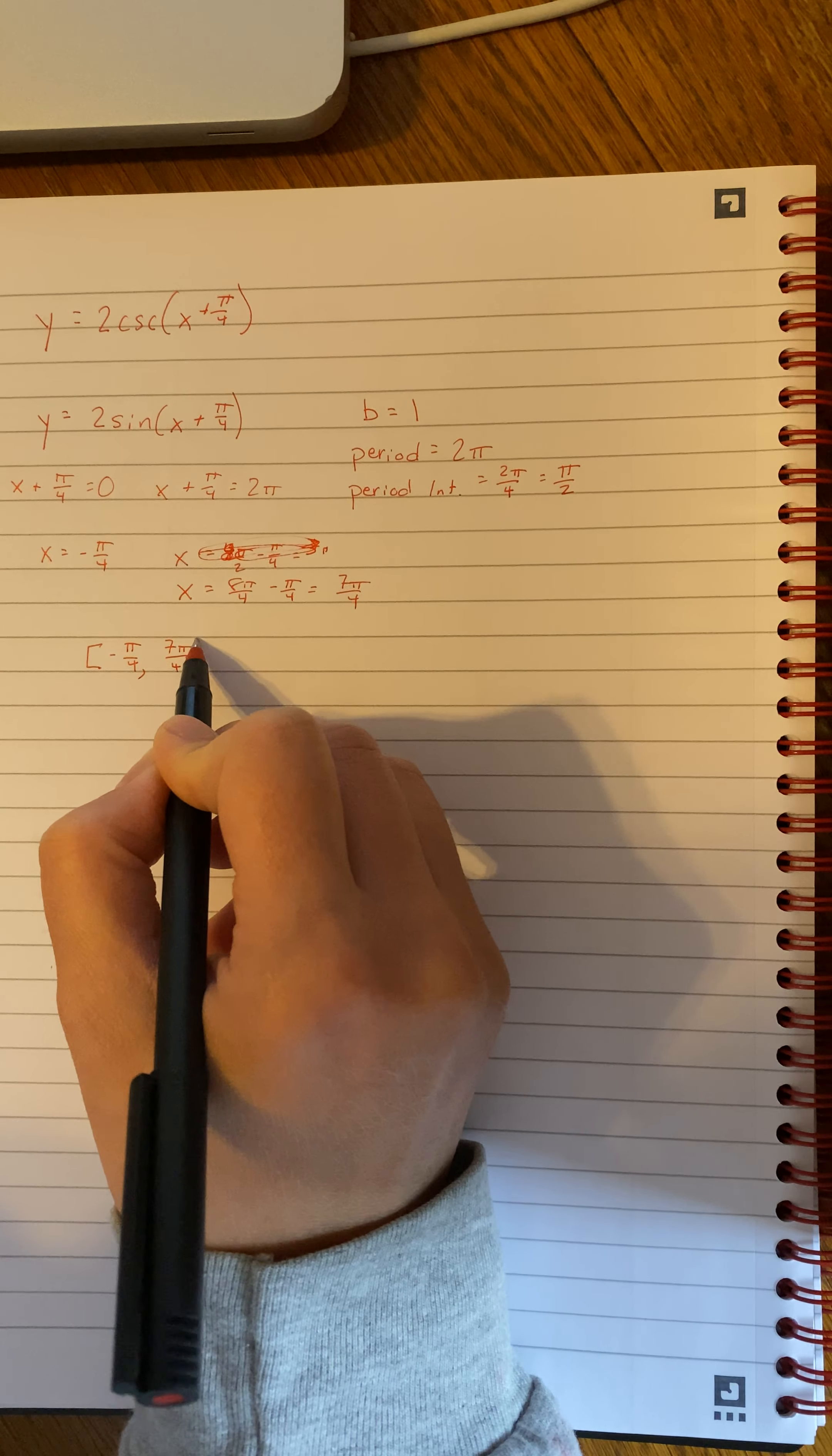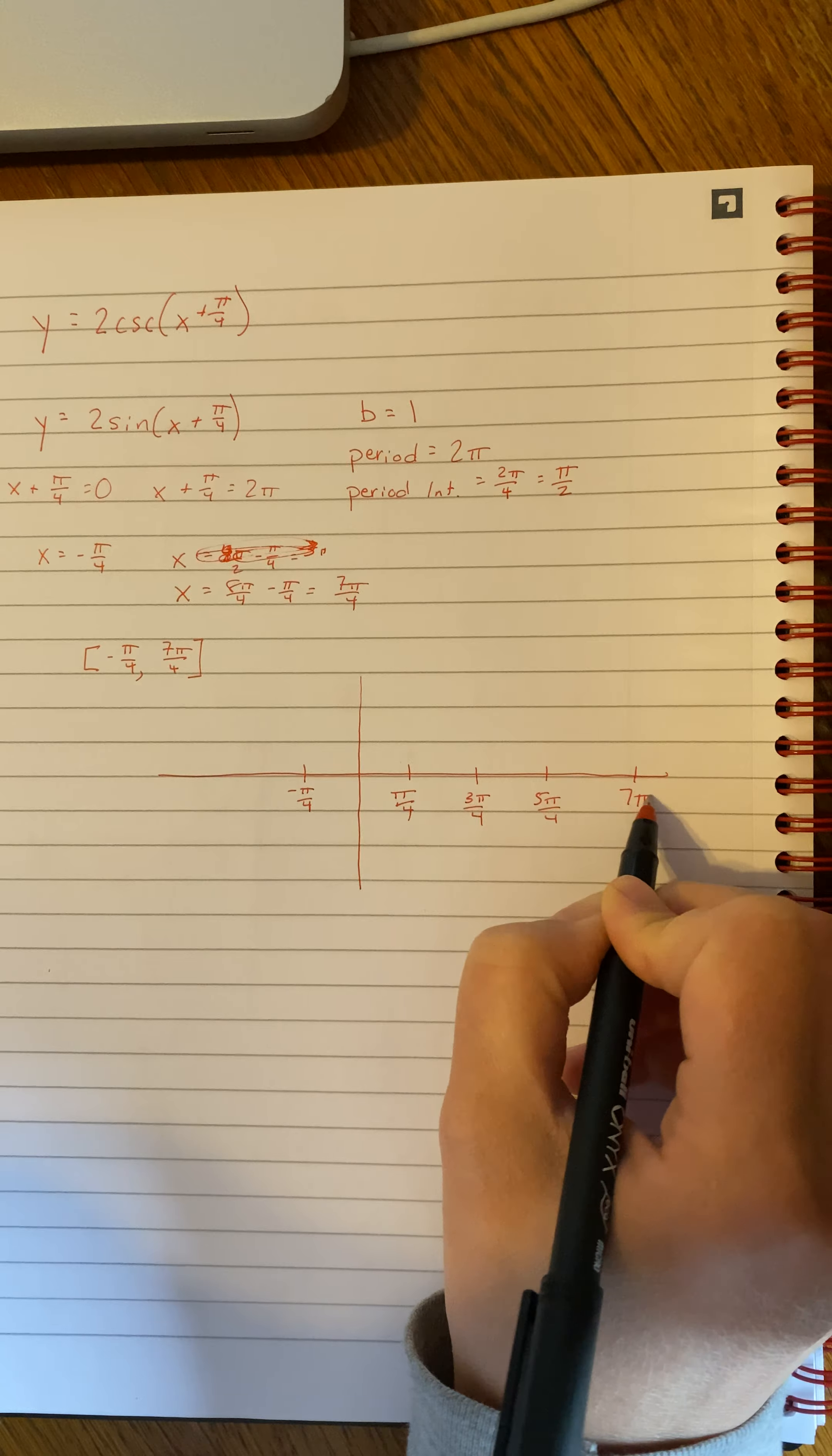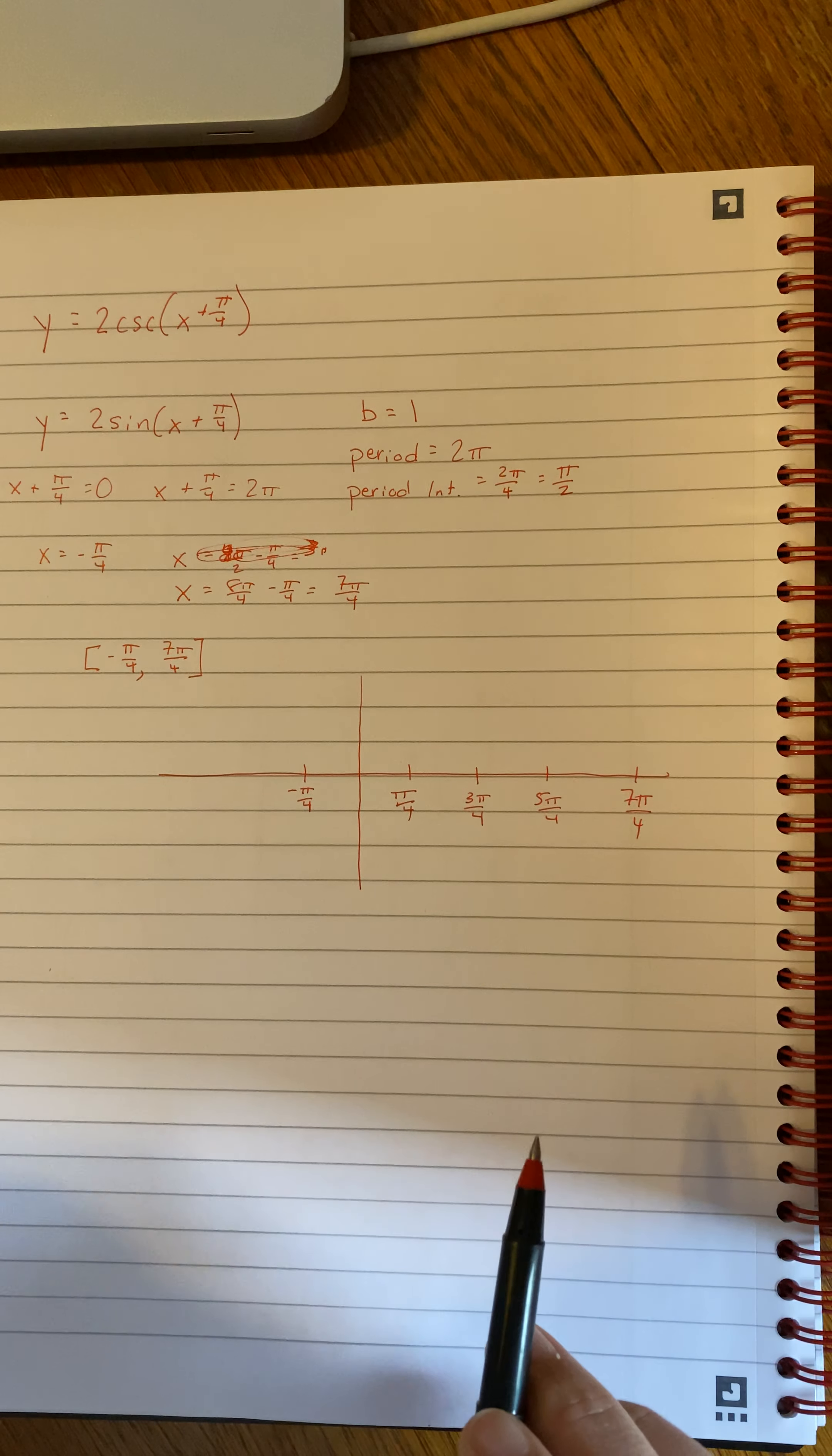All right, so now we can graph. I know I'm starting at negative pi over 4, and I'm going by intervals of pi over 2. So pi over 2 would bring me up pi over 4, so that makes my x-axis right here. So this is 1. I'm adding pi over 2 each time, which is the same as 2 pi over 4. So this would be 3 pi over 4, 5 pi over 4, and 7 pi over 4, which is where our cycle ends.